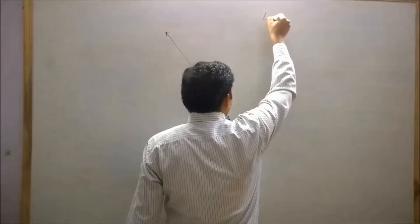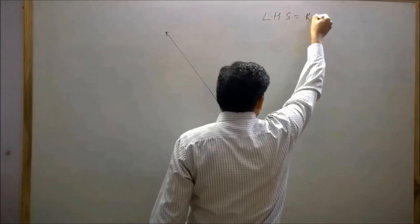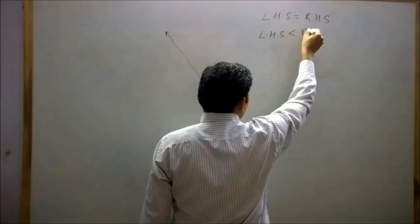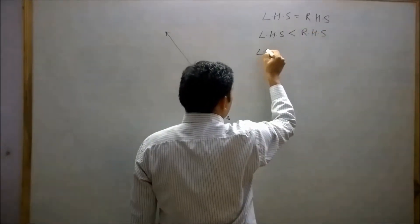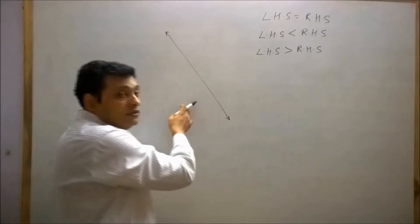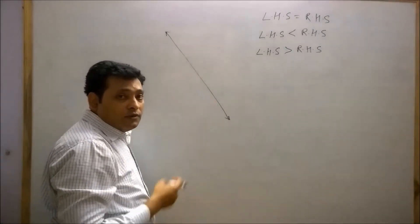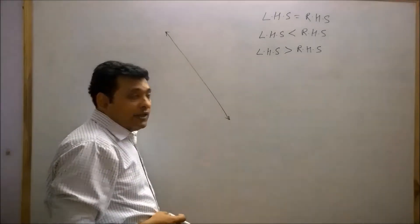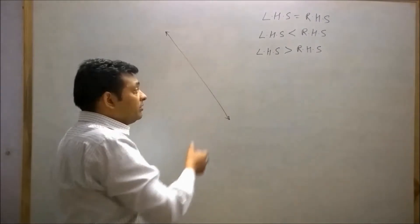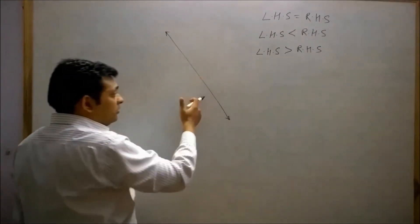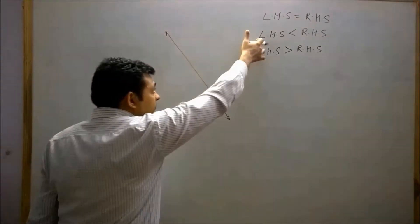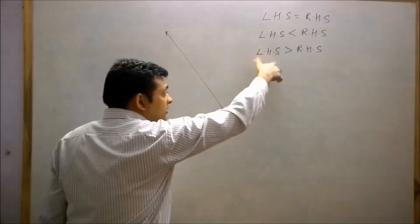One case is left hand side equals to right hand side. The second case is left hand side may be less than right hand side, and the third one is left hand side is greater than right hand side. The points laying on this line are the solution of the given line, so they make left hand side equal to right hand side. Points not laying on this line make left hand side less than right hand side or left hand side greater than right hand side.